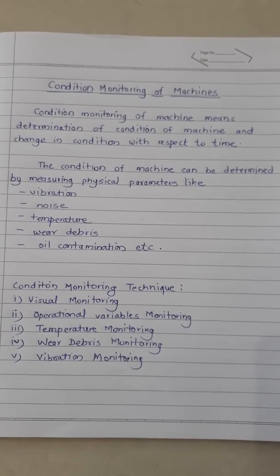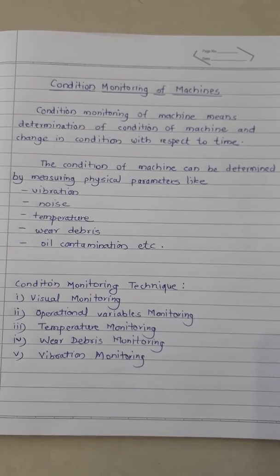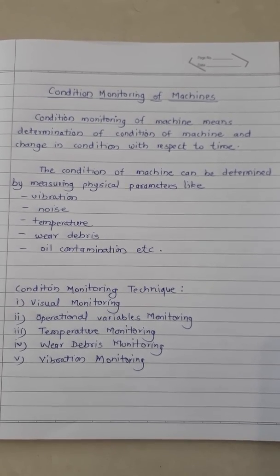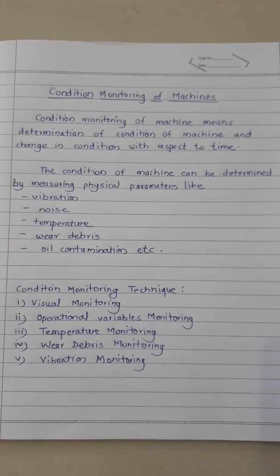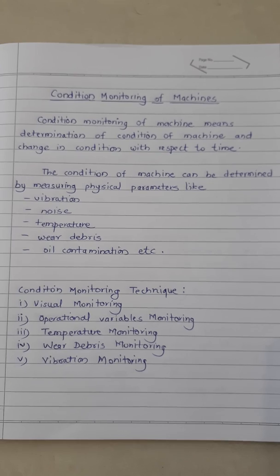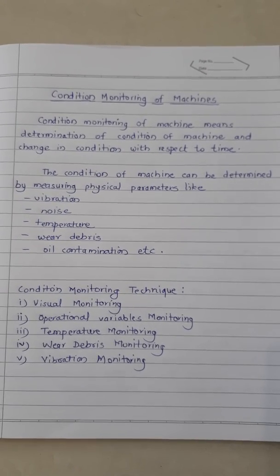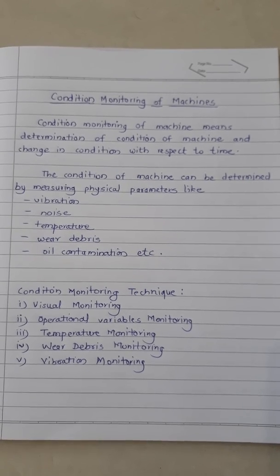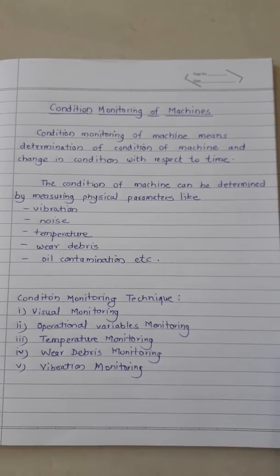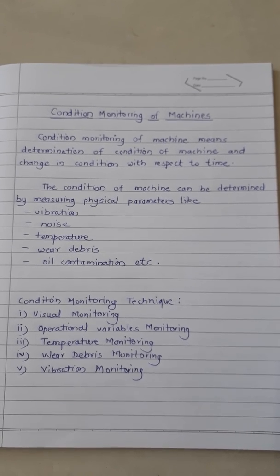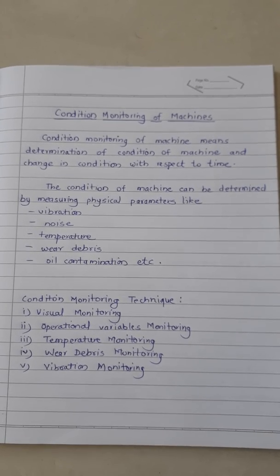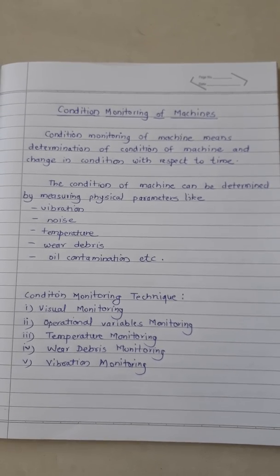Today we will learn about condition monitoring of machines. Condition monitoring of machines means determination of the condition of a machine and change in condition with respect to time. The condition of a machine can be determined by measuring physical parameters like vibration, noise, temperature, wear debris, oil contamination, etc. By studying these parameters, we can determine the machine's condition.